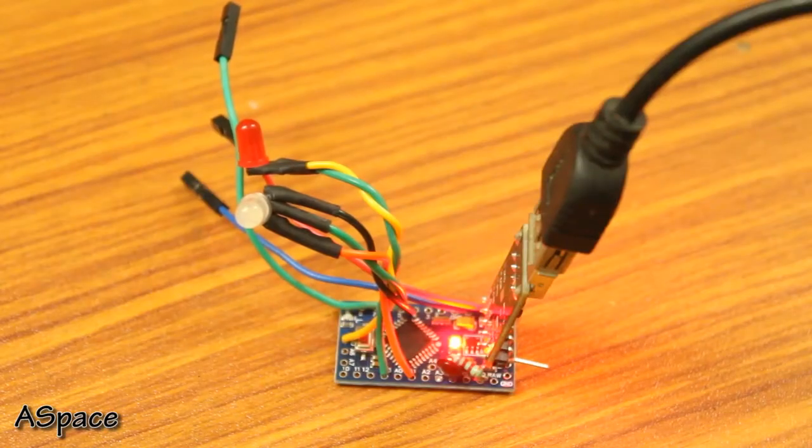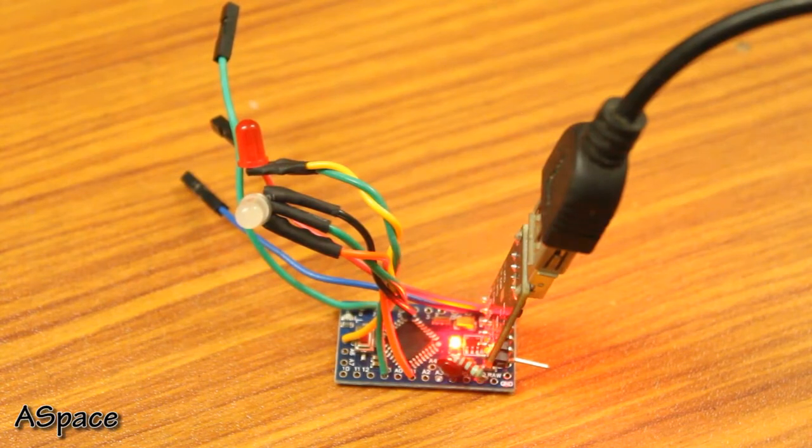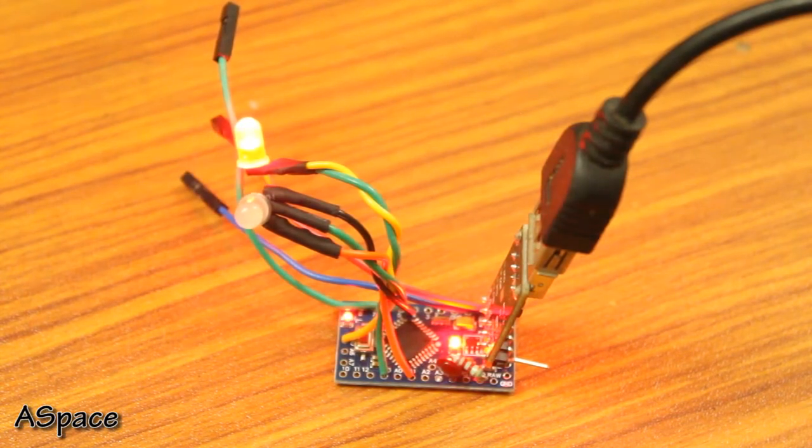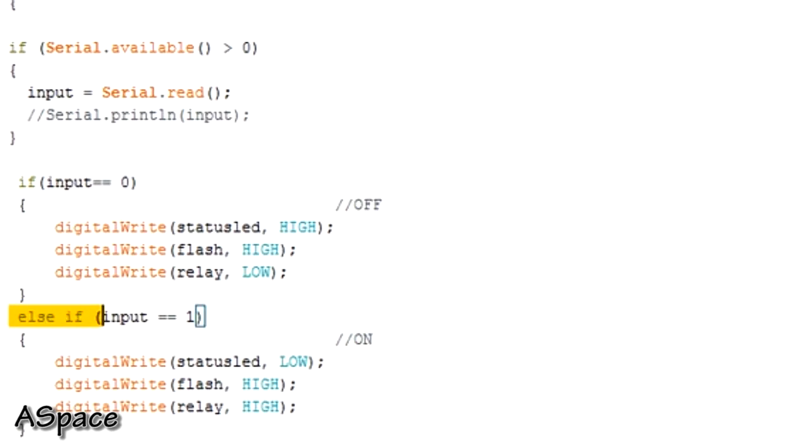Now it was time for uploading the code. I used a TTL converter for uploading the code. Whenever an ON button is pressed on the app, it sends an integer value of 1 and for OFF it sends an integer value of 0.